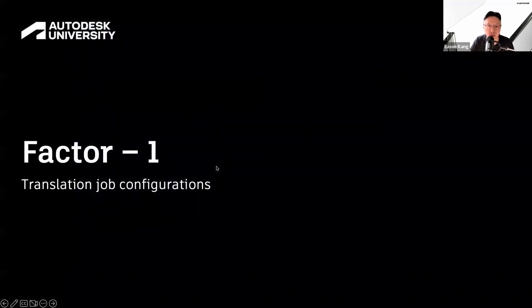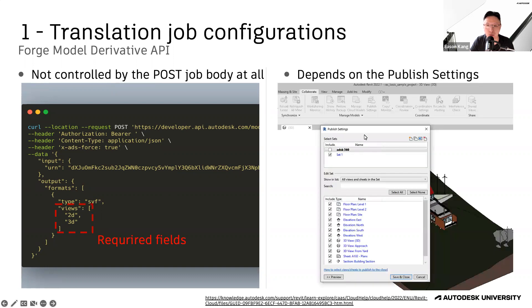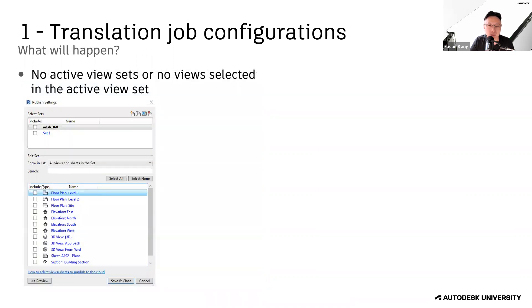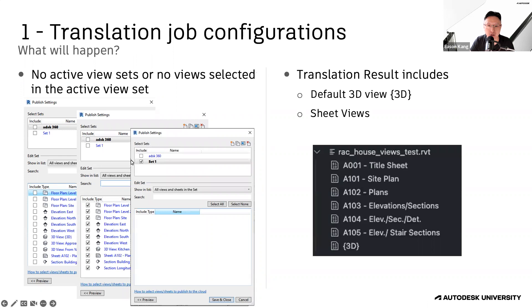The first factor is about the translation job. When using the Model API to translate a Revit model, we submit a job configuration like this. There is one required field called views, but the Model API doesn't use it for Revit. Instead, it will use the views in the publish settings. If there is no publish setting in a Revit model, the Model API will by default translate all sheets and the default 3D view.